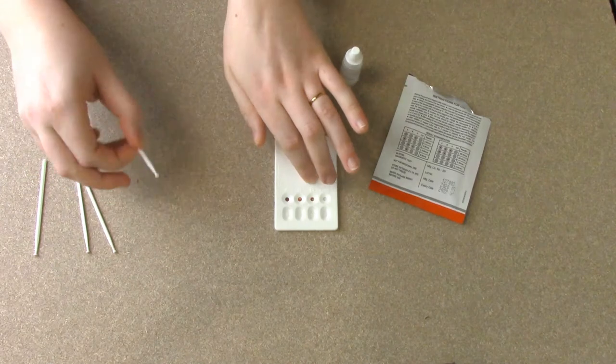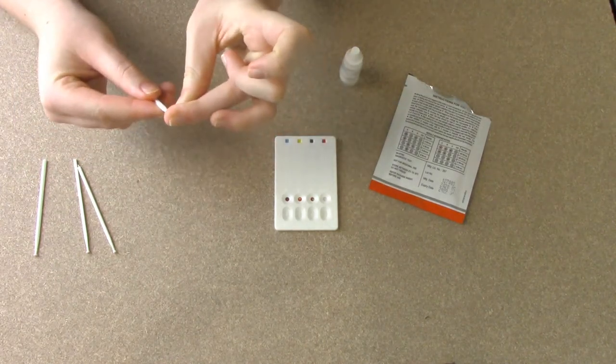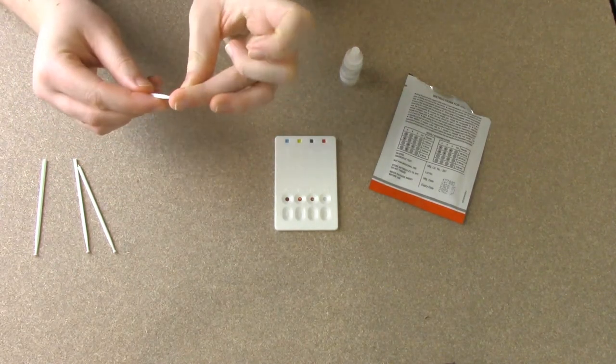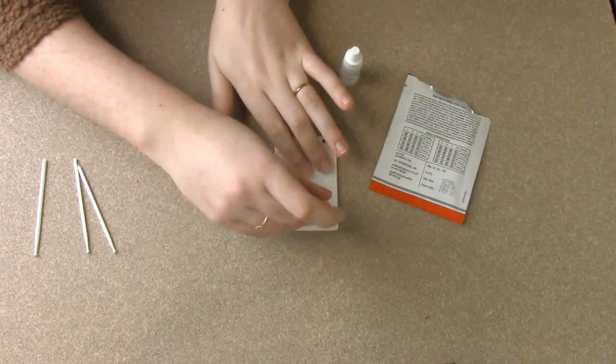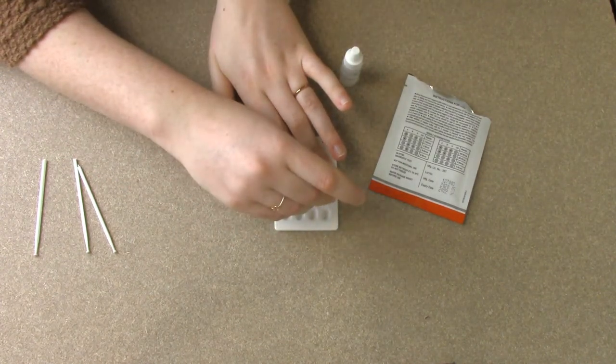And the very last one in row S is our control which is important. It's just going to allow us to know if we did the test properly. So make sure you get some blood in that control well.